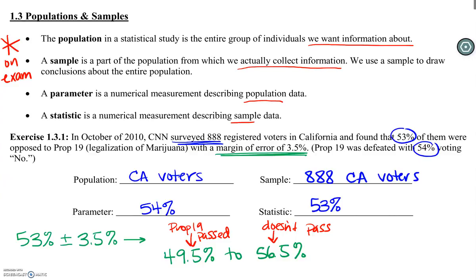That's what we're going to learn a lot more about when we get to the confidence interval section. We're going to really understand how they calculate this, what conclusions we can draw from it, and also if CNN wanted to actually have a conclusive decision, how many people they would have really needed to survey. We'll have that formula as well — we'll talk about all of that when we get to part six of the lecture notes.